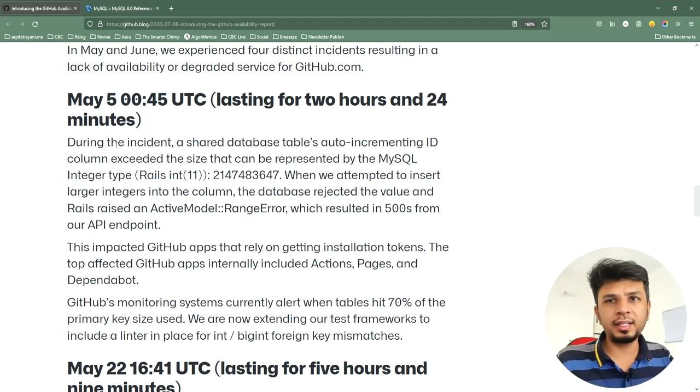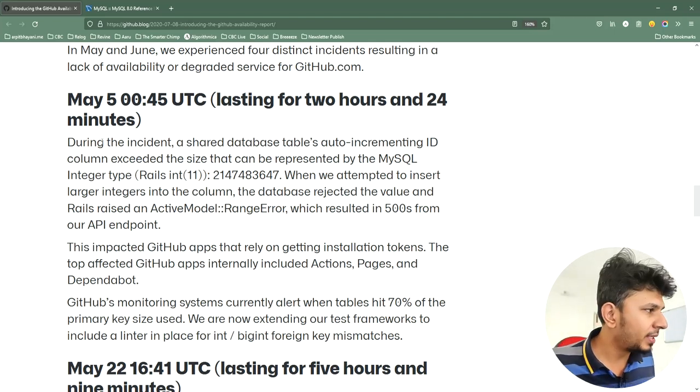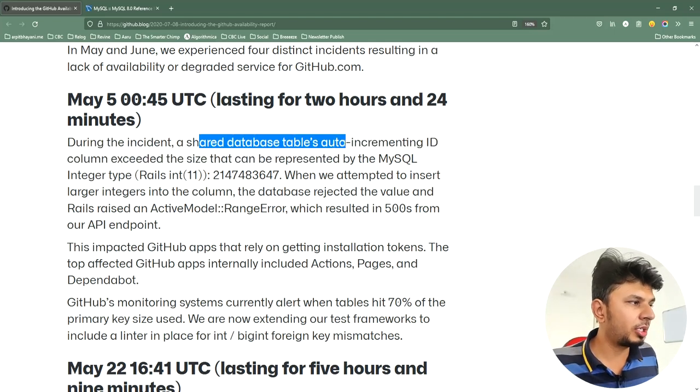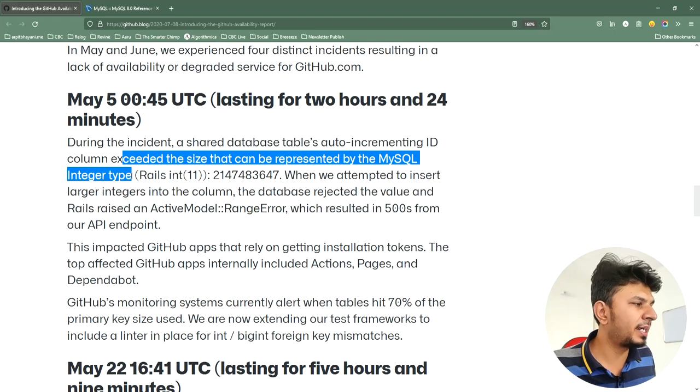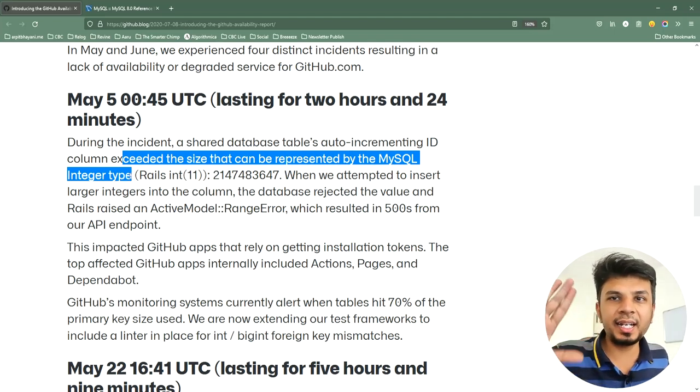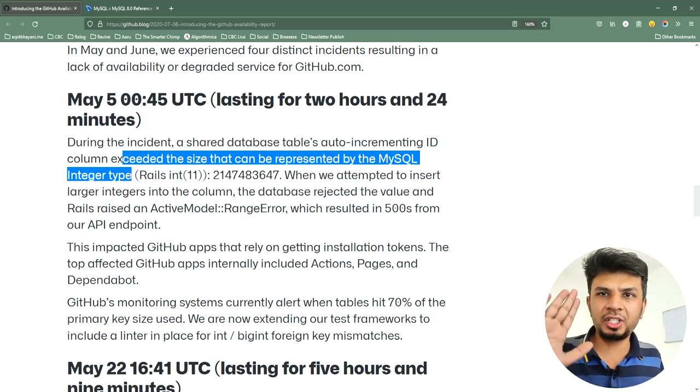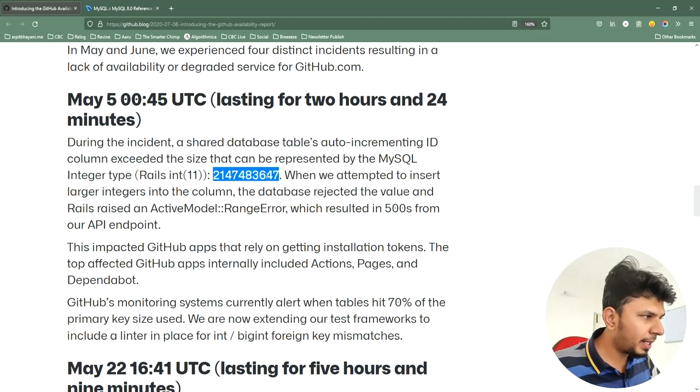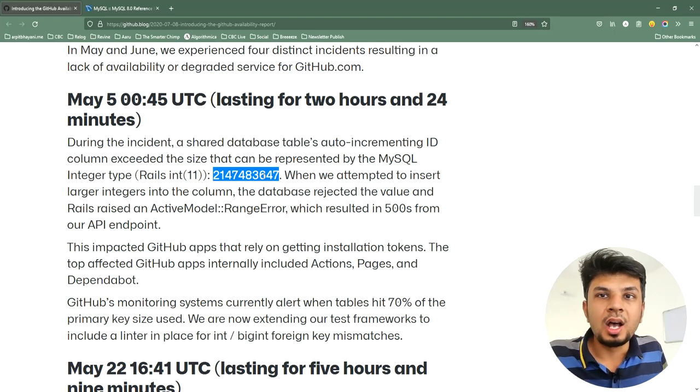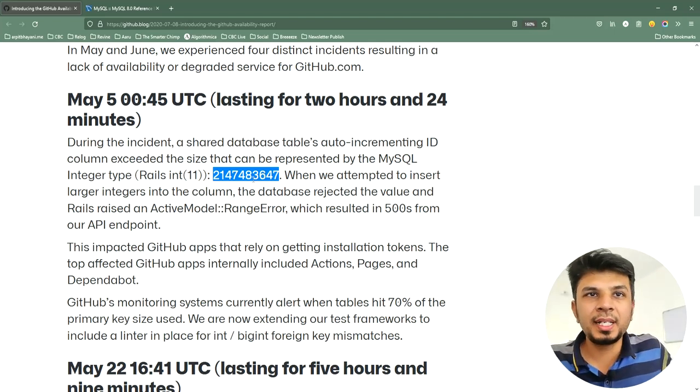So this is their incident summary that they have posted on the blog, which says that during the incident, a shared database table's auto-increment ID column exceeded the size that can be represented by MySQL integer type. So they created a table with a simple MySQL integer type and it was set to auto-increment. So anytime you insert a new row, if you do not give an ID, it would pick the next ID and it would insert the row.